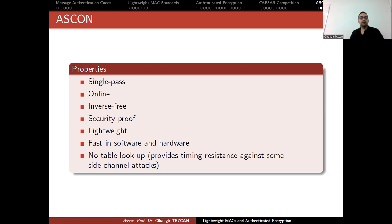The properties of ASCON are as follows. It is a single pass algorithm, so with a single pass over the data you both provide ciphertext and the tag. It is online, inverse-free, has a security proof, is lightweight, and fast in software and hardware.